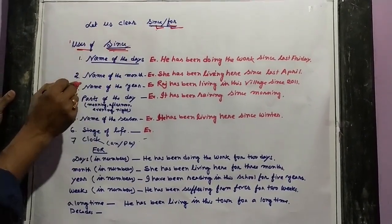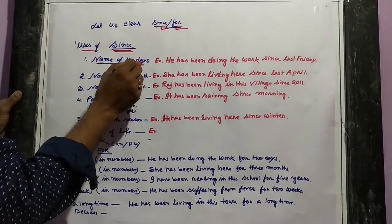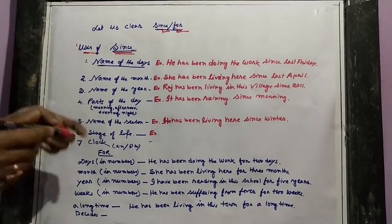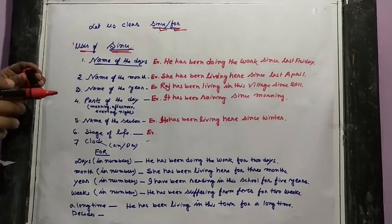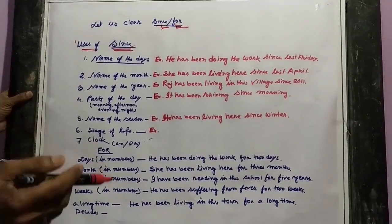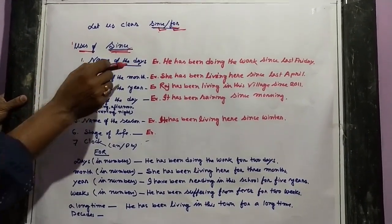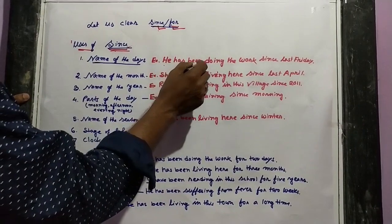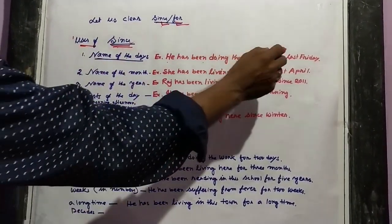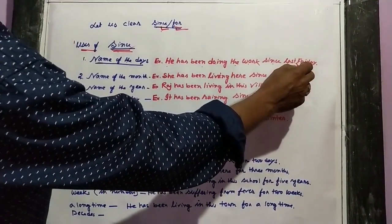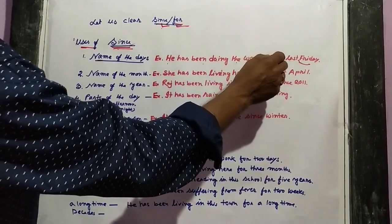Let us look at the uses of 'since'. First, we use 'since' with the name of the days. If any specific day is mentioned, then you have to use 'since'.